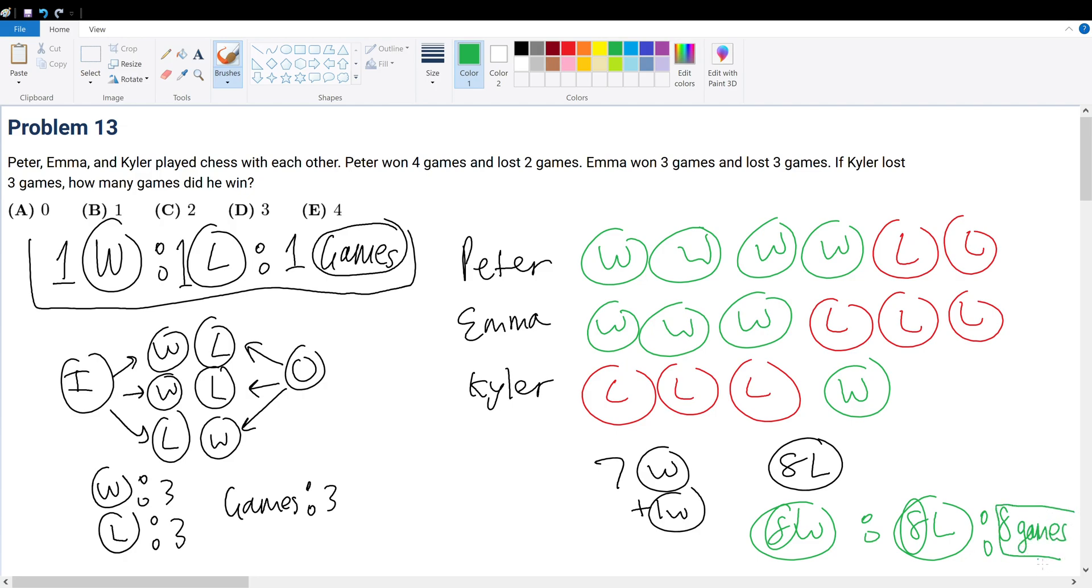Now, that would give us a final satisfactory answer. Because, remember, the number of games that Kyler played doesn't necessarily have to be the same as the number of games that Peter and Emma played in total, which are 6. The answer is 1, by the way. But I just want to give a more analysis of why that's 1.